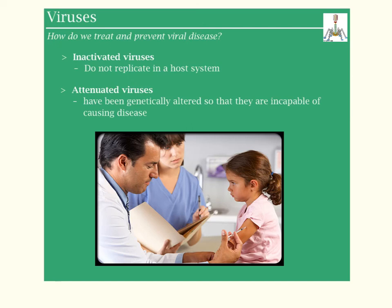We have two types of viral vaccines: inactivated and attenuated. Inactivated viruses do not replicate in a host system — you have that virus in your body, but it doesn't have the tools to replicate and therefore can't cause illness. Attenuated viruses have been genetically altered so they are incapable of causing disease — they might replicate throughout the body, but they don't have the ability to cause any symptoms.